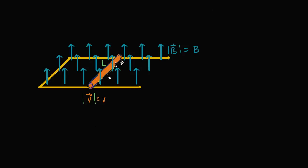And if you have a change in flux, that is going to induce an electromotive force. So it's going to induce a voltage in this loop, which will cause a current to flow. So let's think about what that electromotive force that's going to be induced is going to be.